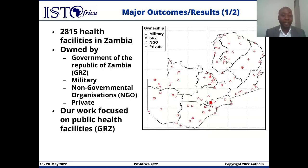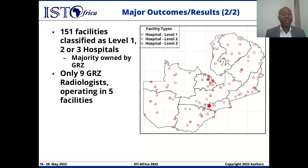We found out that there are 2,815 health facilities in Zambia owned by the government, the defense forces, non-government organizations, and the private sector. But our work focused on the public health facilities in Zambia. Out of the 2,815 facilities, 151 are classified as hospitals under level 1, level 2, or level 3, and the majority of the hospitals are owned by the government and run through the Ministry of Health.